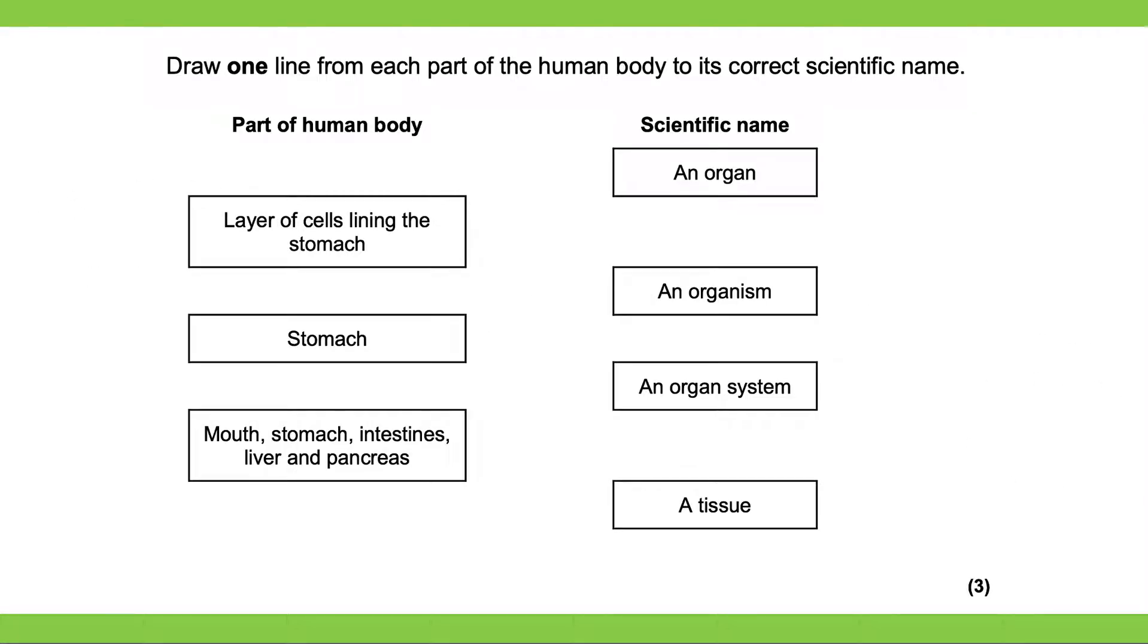Next question over here, draw one line from each part of the human body to its correct scientific name. So we have the part of the human body on this side. And we have the scientific name on this side.